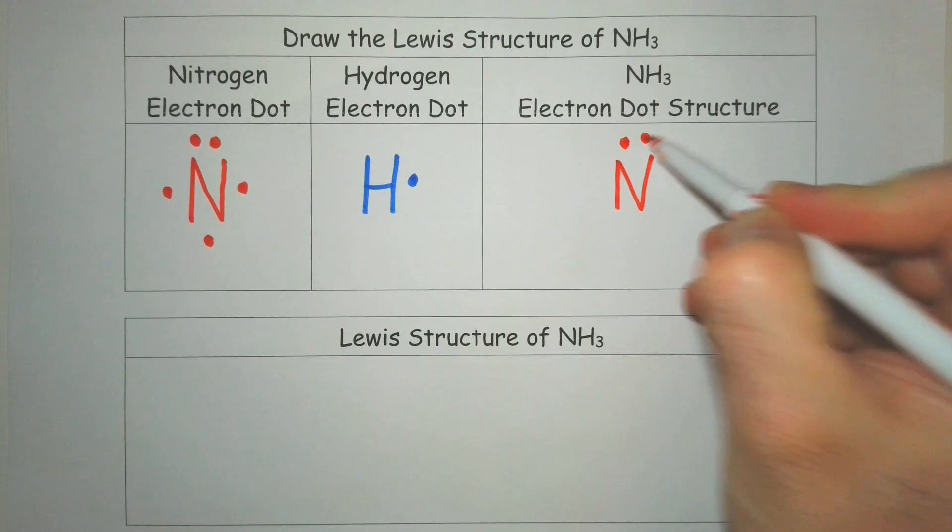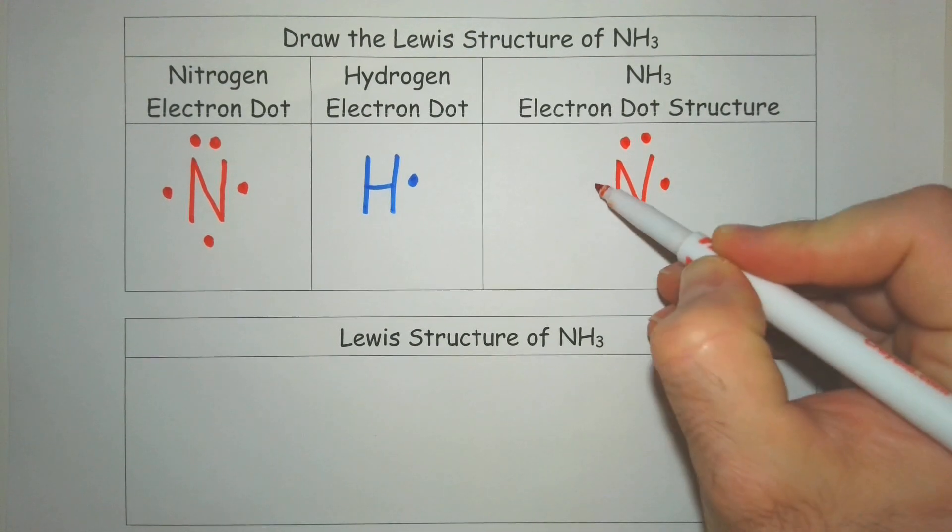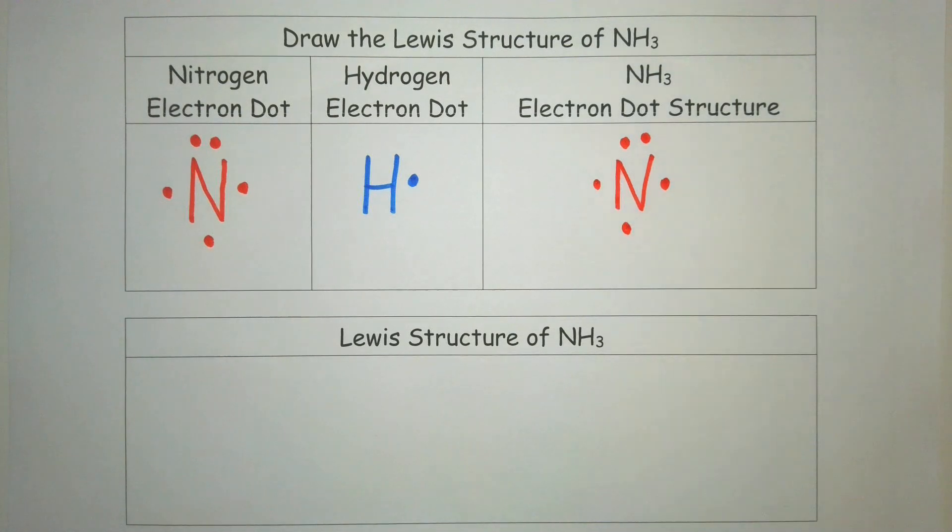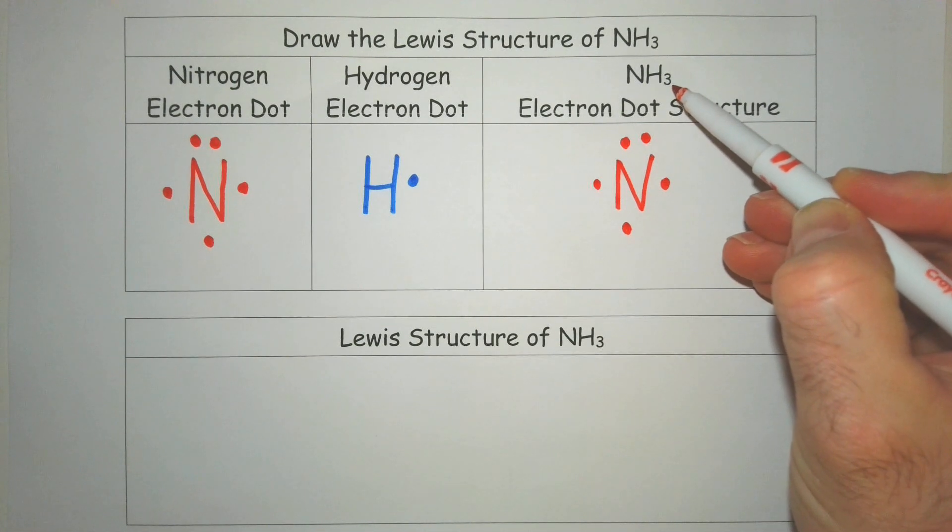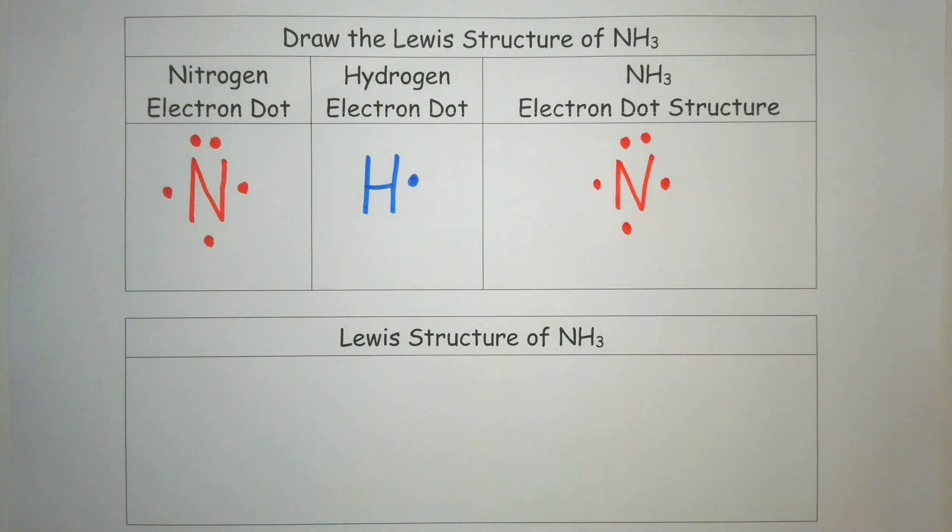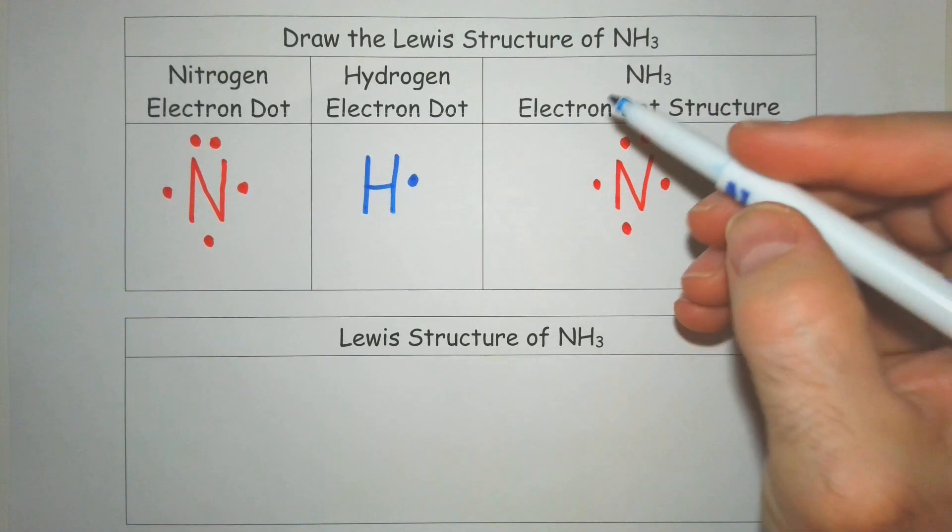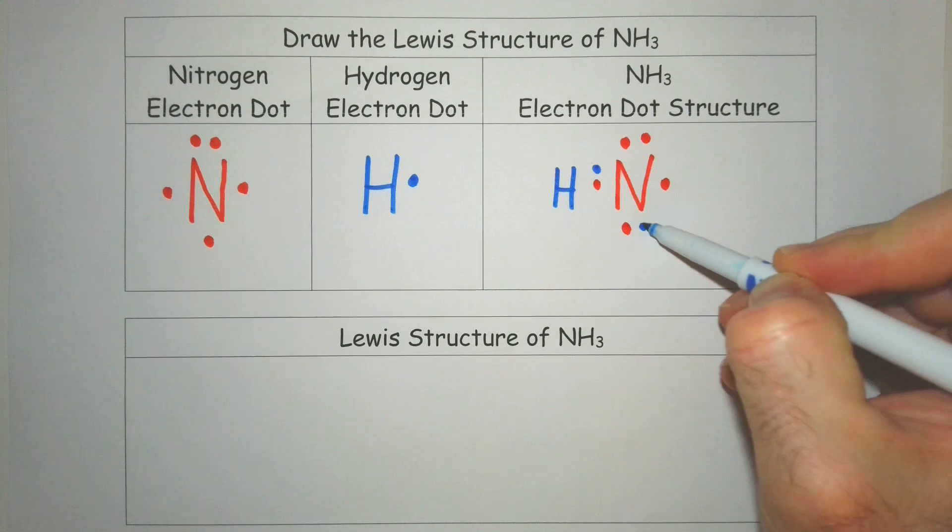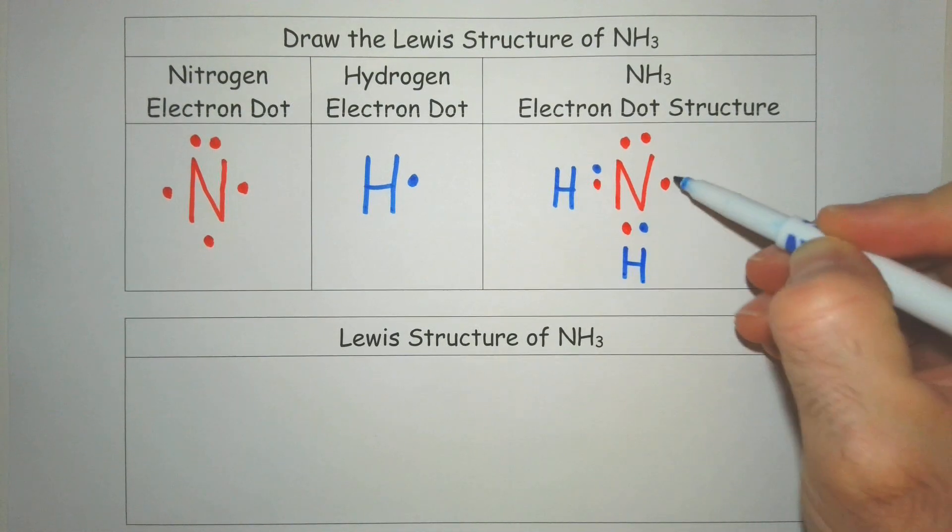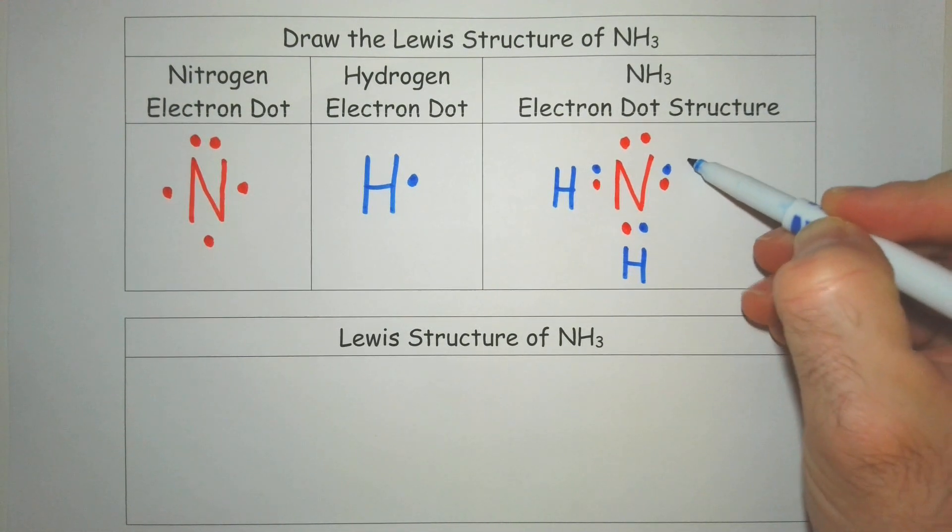I'm going to draw the electron dot notation of our nitrogen. And we see we have three places where we're going to need a bond. And we also have three hydrogens, which each are going to make a single bond. So we're going to place our hydrogens in those locations and bond with our nitrogen.